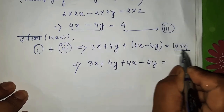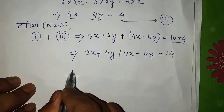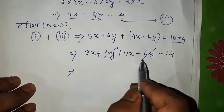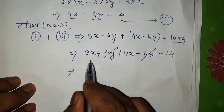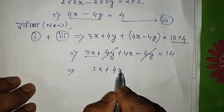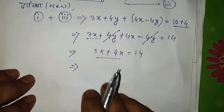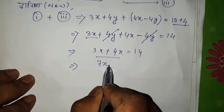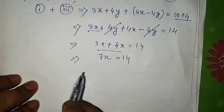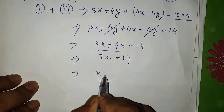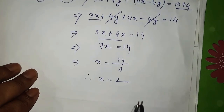We get 4y minus 4y, which cancels. That leaves 3x plus 4x. In total, that gives us 7x. If we put the value in, we have 7x equals 10, so x is equal to 2.